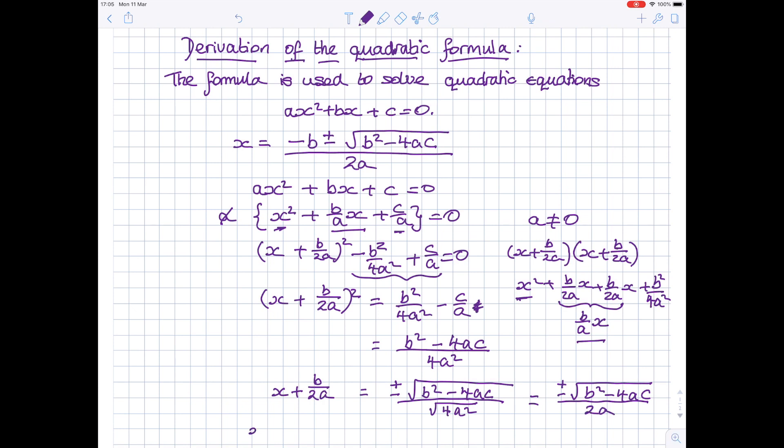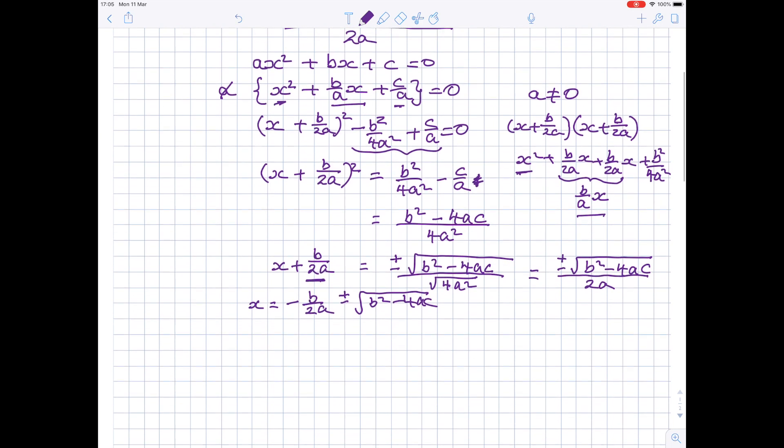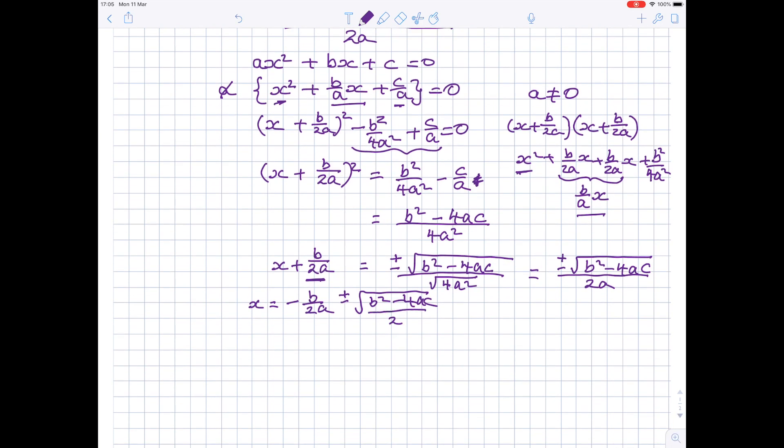One more line. Take the constant on this side, take the b over 2a over the other side, so it's minus b over 2a plus or minus the square root of b squared minus 4ac all over 2a. They've both got the same denominator, so I can just write the denominator once, and on the top I have minus b plus or minus the square root of b squared minus 4ac, which is the formula you use to solve a quadratic equation.